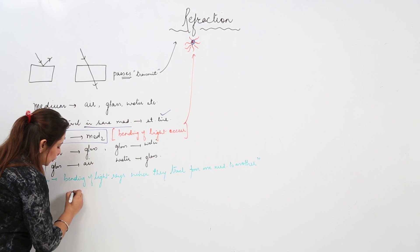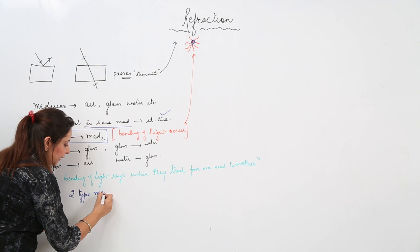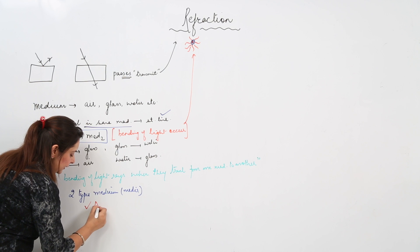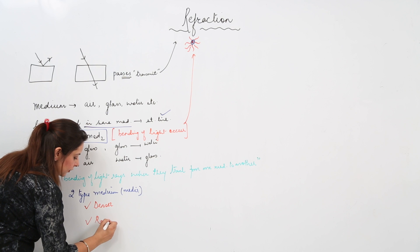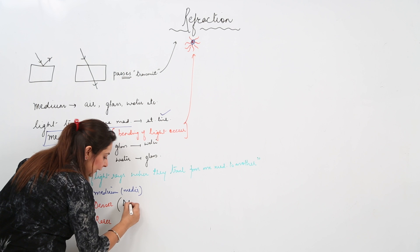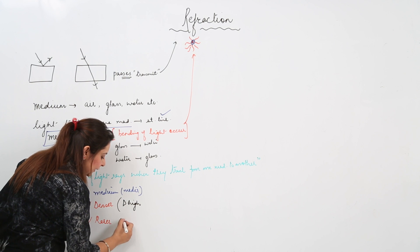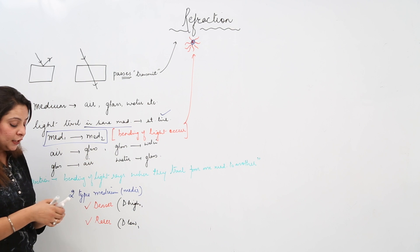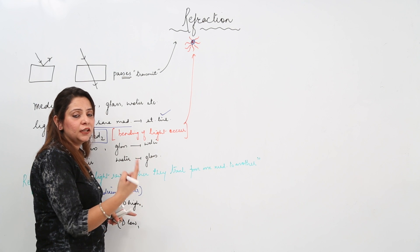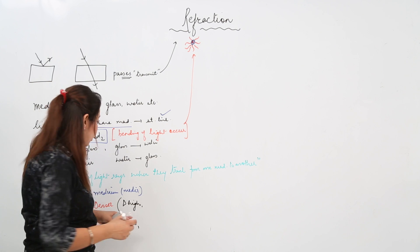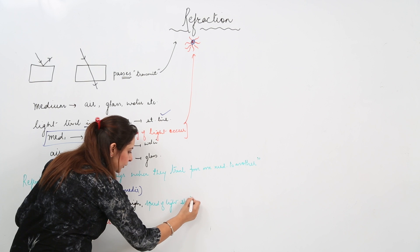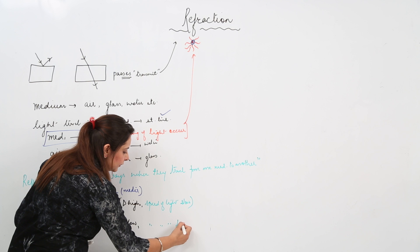We have two types of optically active media: denser and rarer. The denser medium is one in which density is higher. In denser medium, the speed of light is slow because it encounters many obstacles. In rarer medium, density is low, so the speed of light is fast.